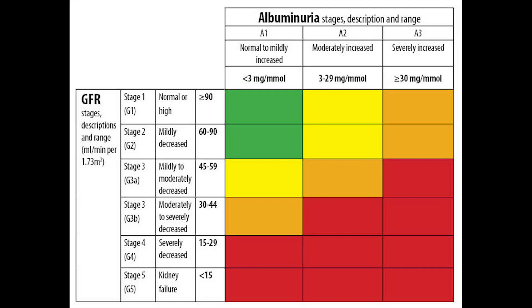In 2012 the National Kidney Foundation, in collaboration with other international societies, came up with an update to their classification. They split stage 3 into stage 3a, when kidney function is above 45%, and stage 3b, when kidney function is below 45%. They also added protein in the urine into the classification, with the whole point being to identify which patients are more likely to progress to kidney failure than others.